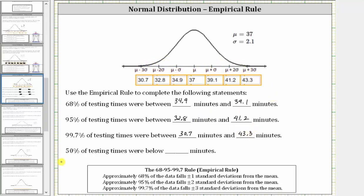The last statement: 50% of the testing times are below how many minutes? Remember for a normal distribution, the mean, median, and mode are all at the center of the distribution, which is here. The testing time is 37 minutes.